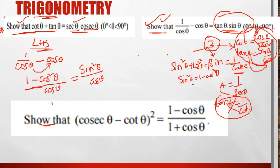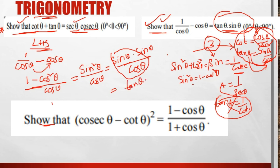So we have sin²θ/cos θ, which equals sin θ · sin θ / cos θ. Since sin θ/cos θ = tan θ, this becomes tan θ · sin θ, which is the RHS. Therefore LHS = RHS.